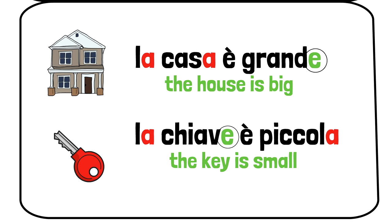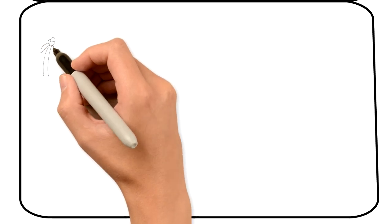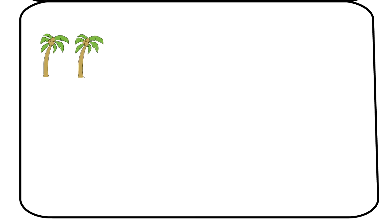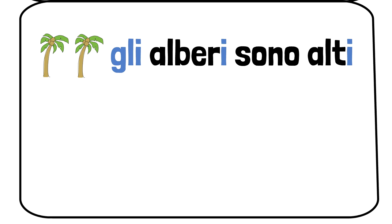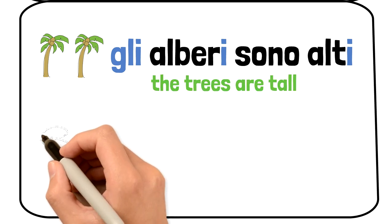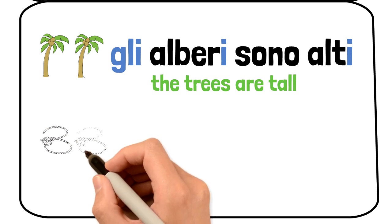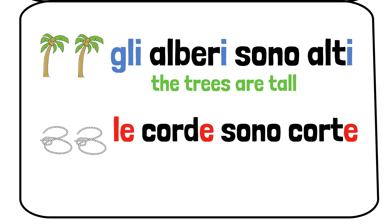Let's look at some plurals. Come sono gli alberi? Gli alberi sono alti. Come sono le corde? Le corde sono corte. The ropes are short.